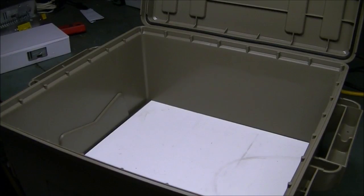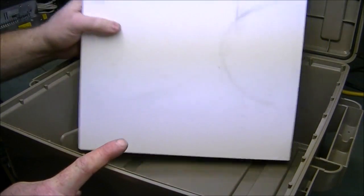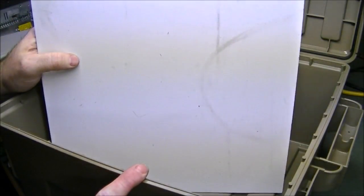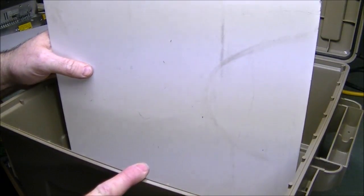All right, so the first thing we're going to do is we're going to talk about the case. Inside here you're going to notice that we have a piece of white plastic. Now the plastic was something that was donated by somebody from outside of the community, a member of my family, and they will remain anonymous because they probably shouldn't have done it.